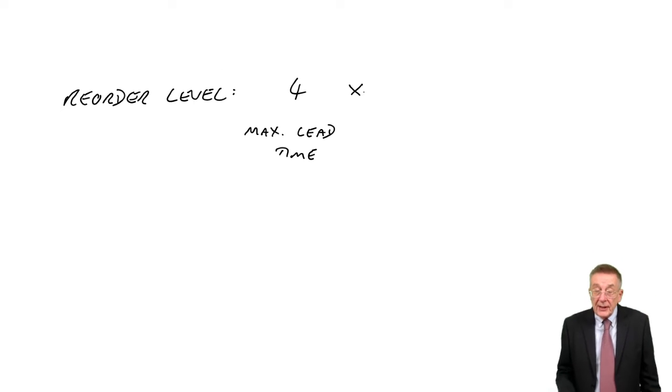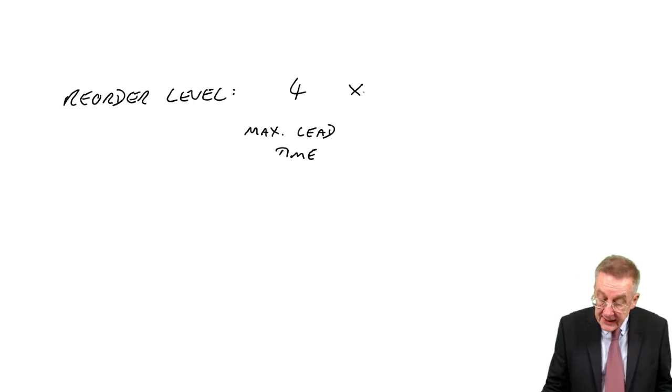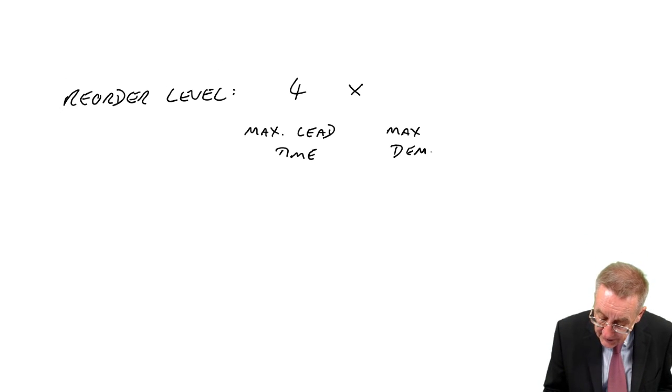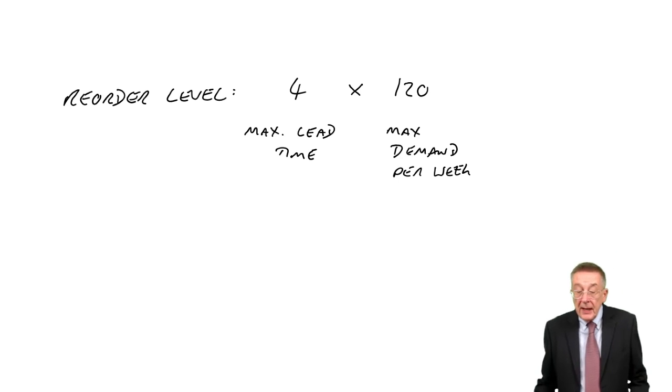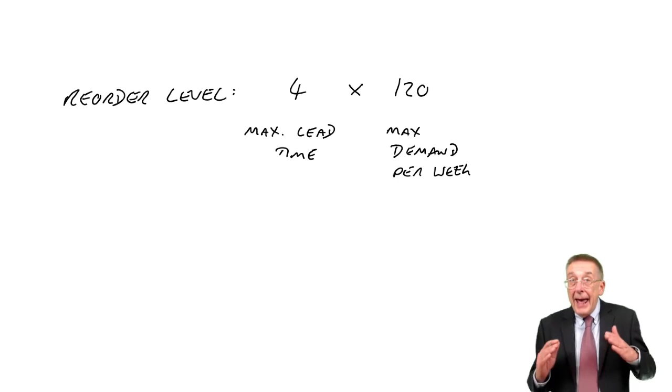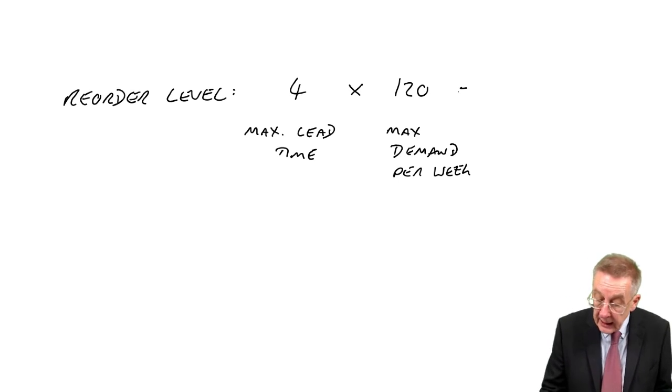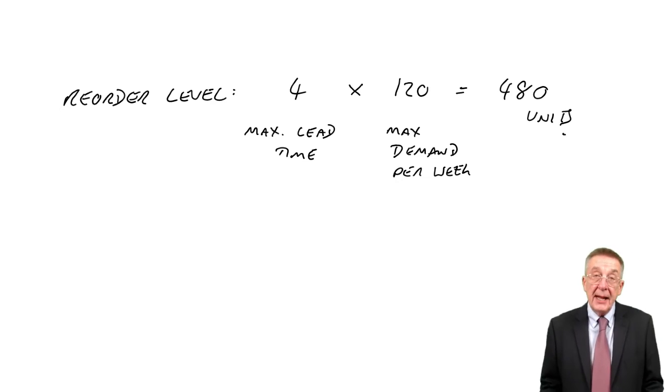As far as the demand per week is concerned, well, again, the worst that can happen is the maximum demand per week, which is 120. And so there are plenty of times we won't need that many if we want to make sure we never, ever run out of inventory, we're going to need to reorder when we've 480 units left.